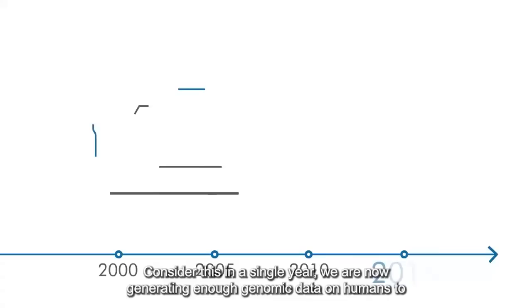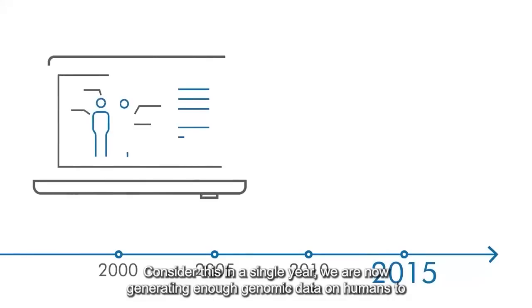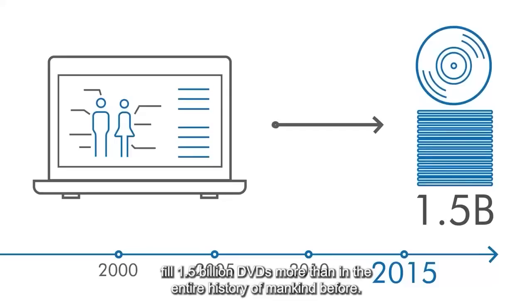Consider this. In a single year, we are now generating enough genomic data on humans to fill 1.5 billion DVDs, more than in the entire history of mankind before.